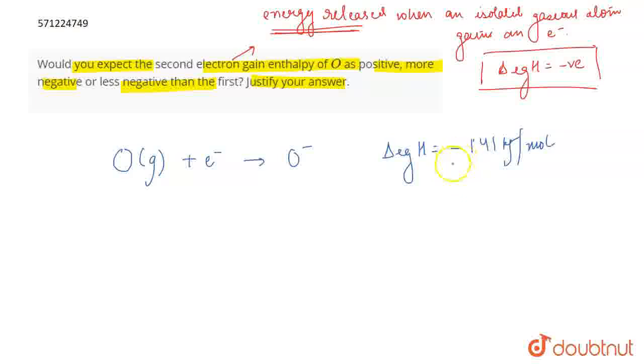Now, when it has to gain another electron, what is going to happen? Electron is going to get added to this O negative. O minus is going to gain another electron and lead to the formation of O2 negative, and this will be regarded as the second electron gain enthalpy, and this is going to have a positive value.